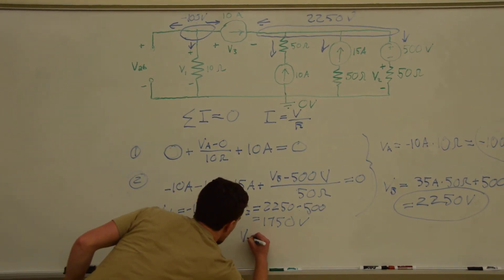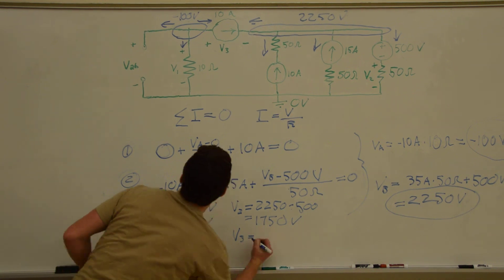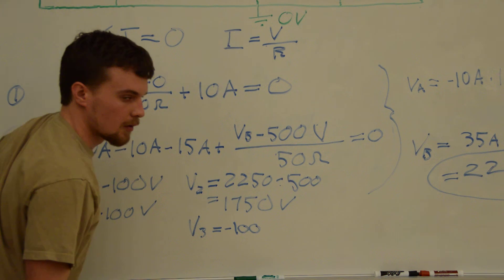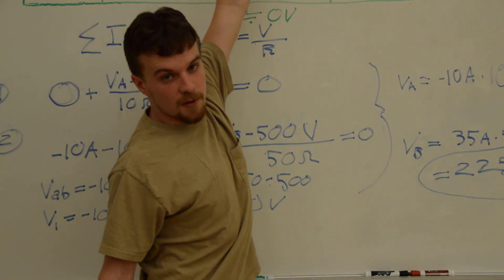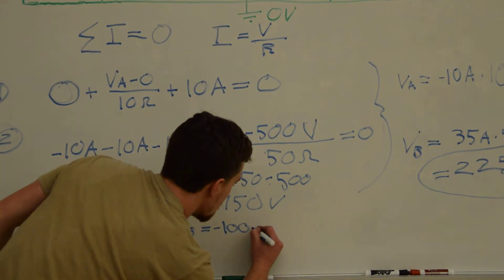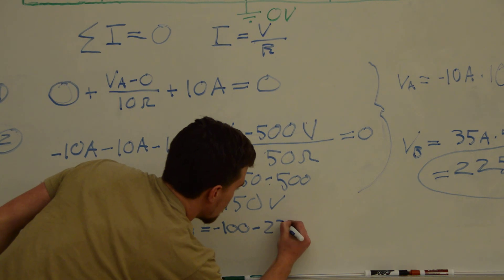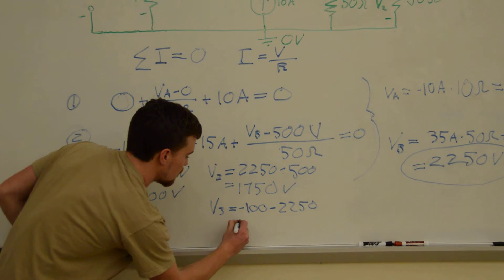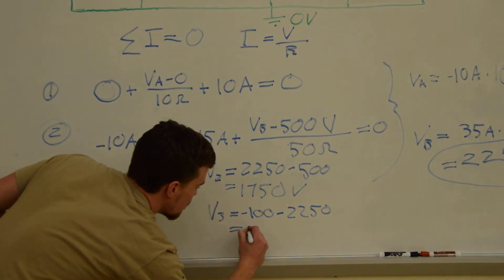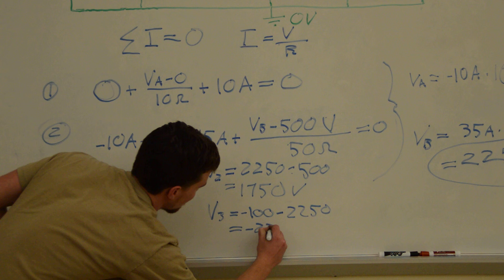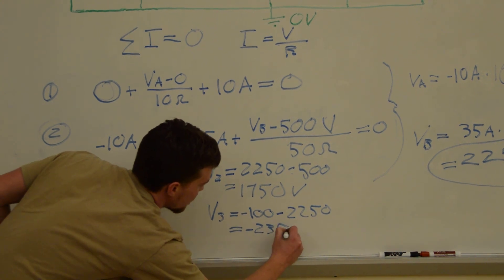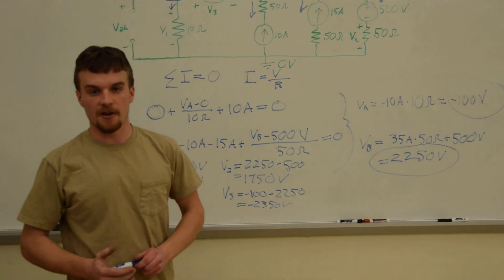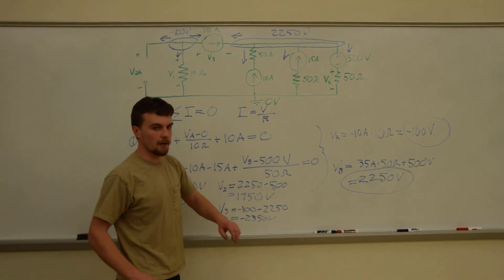So, we have V3 is equal to negative 100 volts minus 2250, which is going to equal negative 2350 volts. And again, that's negative 2350 volts, because the writing is a little bit crammed.